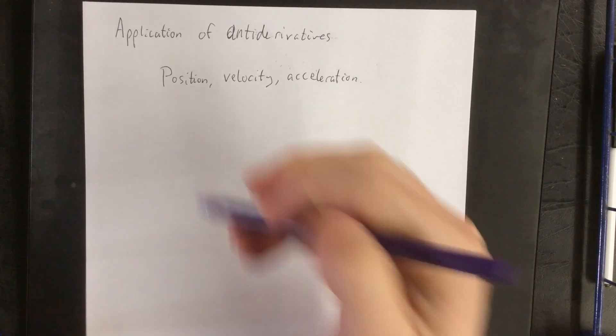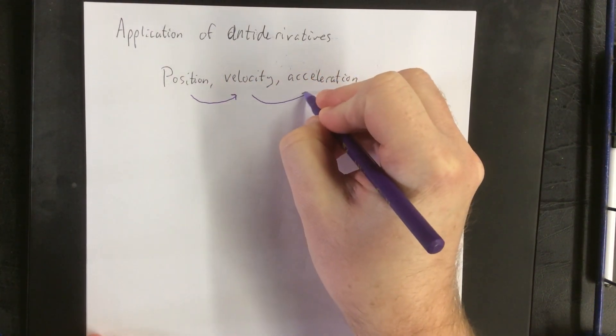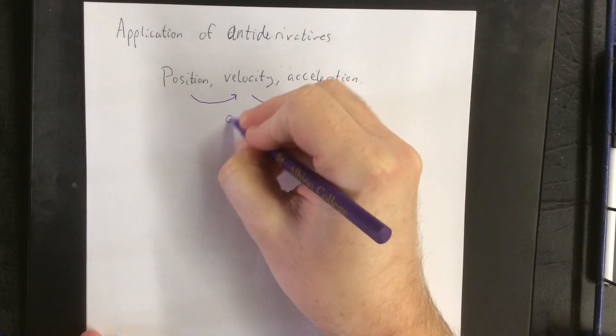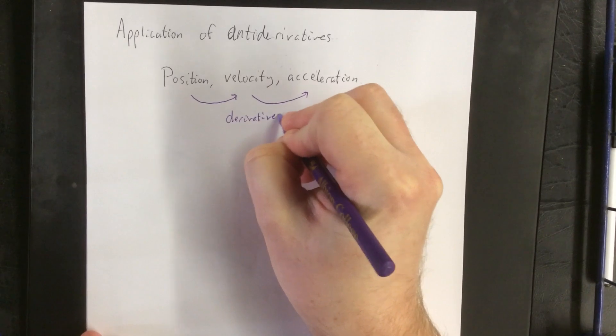Back in chapter 3, we talked about one of the applications of derivatives as being the link between or among position, velocity, and acceleration. If you have a position function and you're interested in finding a velocity function, or if you have a velocity function and you're interested in finding an acceleration function, you can do so by finding derivatives.